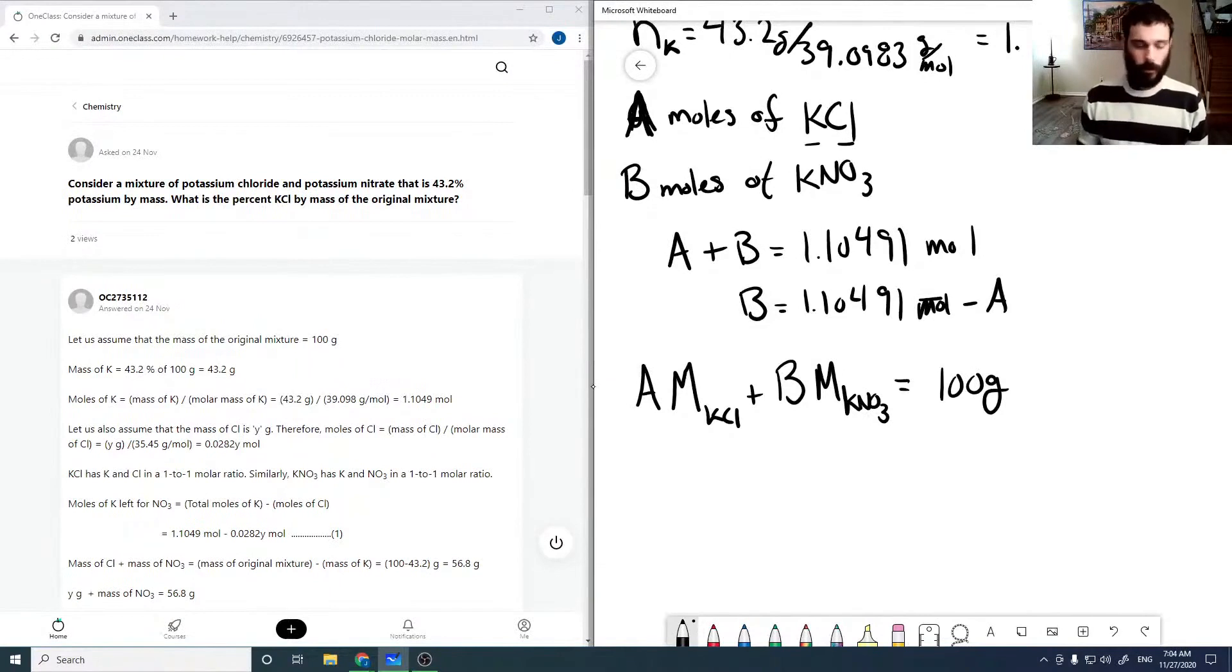But again, we're going to convert that anyway. Or from this expression above, A times our molar mass for KCl plus 1.10491 moles minus A times the molar mass of KNO3 is equal to 100 grams.